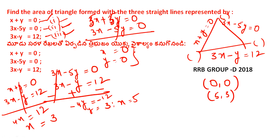Next, solving the first and third equations: 3 + y = 0, so y = minus 3. And x = 3. Third point is (3, −3).